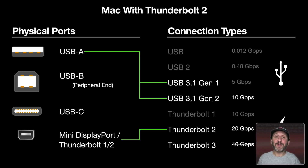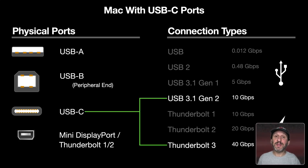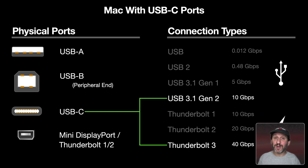On a modern Mac we've eliminated USB-A ports and the old-style Thunderbolt ports. Instead there's just one type of port: USB-C. This can connect to USB 3.1 and is backwards compatible with all previous USB versions. It can also connect to Thunderbolt 3, Thunderbolt 2, Thunderbolt 1, and Mini DisplayPort.